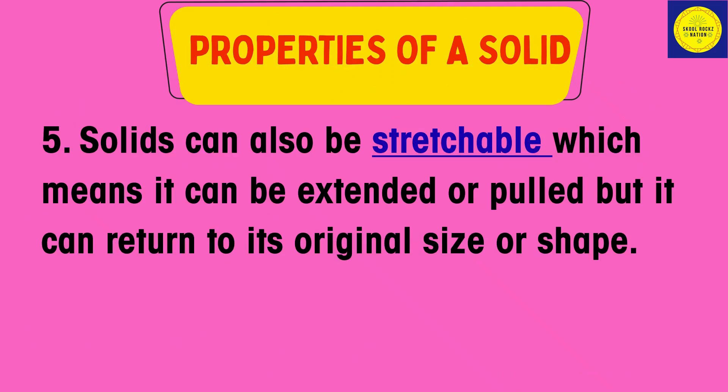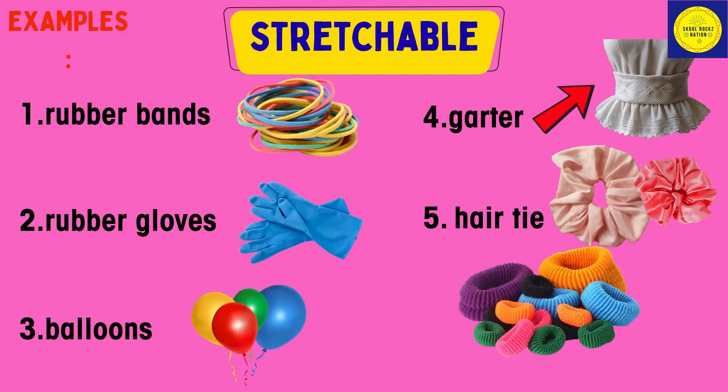Property 4: Solids can also be stretchable, which means it can be extended or pulled, but it can return to its original size or shape. Examples of stretchable objects: rubber bands, rubber gloves.